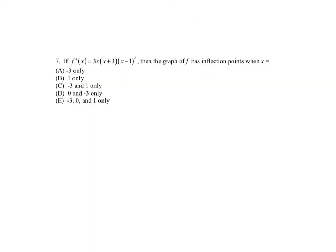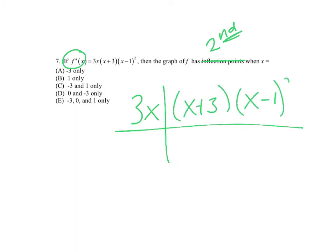Alright, if f double prime equals this function, then the graph has a point of inflection when x equals what? So again, point of inflection means I need the second derivative. Convenient again, they give me the second derivative. So if I tee that up, I should get x equals 0, x equals negative 3, and x equals 1. Now some of you are going to jump on that answer and pick E. Those are the fools. Don't do that. You can't say you have a point of inflection until you make a sign chart.